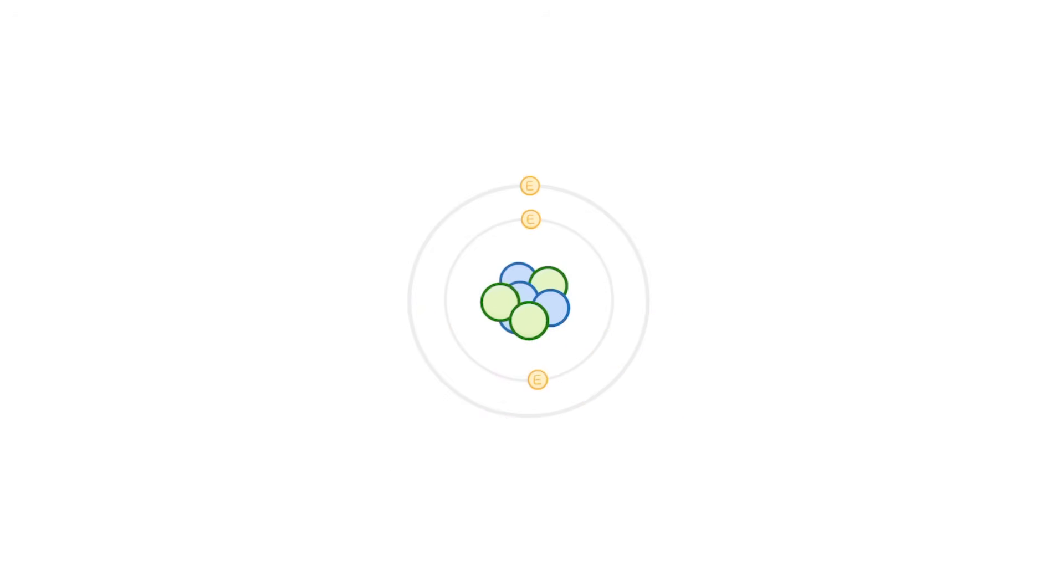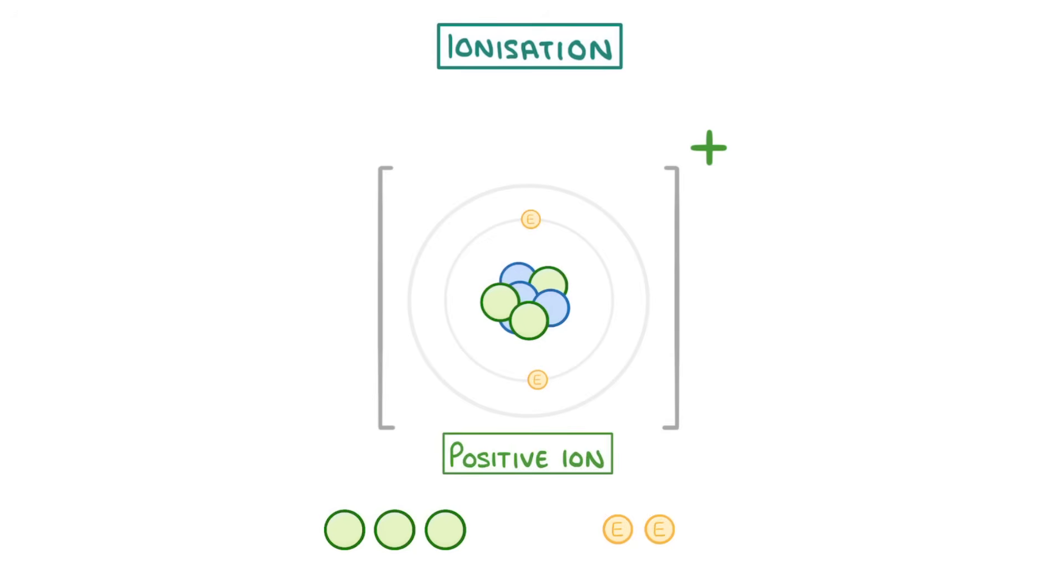The very last thing we need to look at is ionization. Very occasionally, one of the outermost electrons should absorb so much energy that it is able to completely leave the atom. This leaves the atom with more protons than electrons, and so it's left with a positive charge, which means that we now call it a positive ion, rather than an atom.